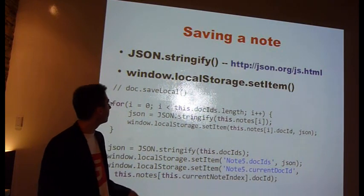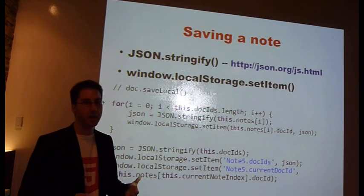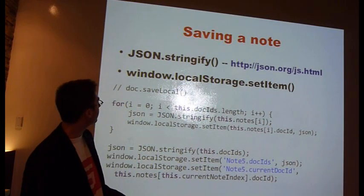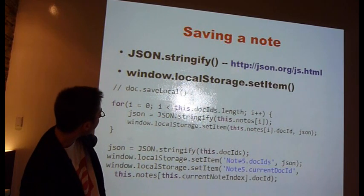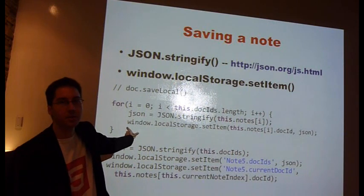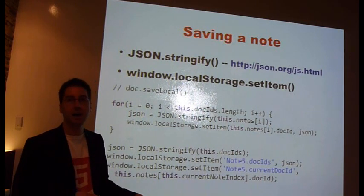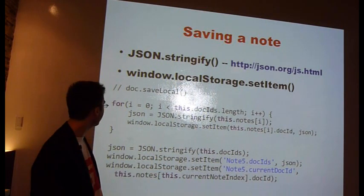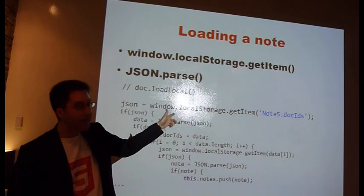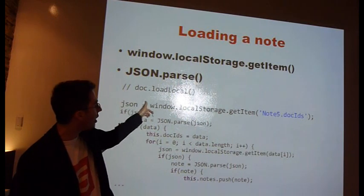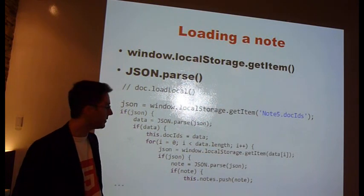Let's get right into saving a note — not difficult. I call json.stringify, which turns a JavaScript object into a string, and then I just call window.localStorage.setItem. You can see the code here. This is actually the newer code on the developer branch. I'm saving each document separately now as an optimization. When you want to load a note, all you have to do is window.localStorage.getItem, and then json.parse to turn it back into an object. Very easy — you can do it right now.